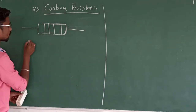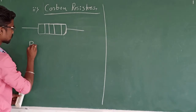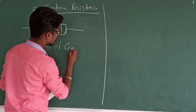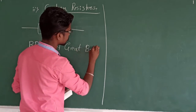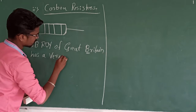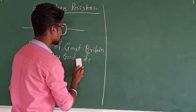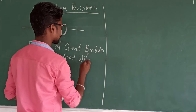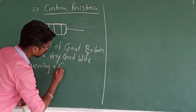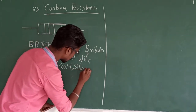Before looking at the standard chart, let me show you how to remember all those colors. I will write one sentence: 'B.B. Roy of Great Britain has a Very Good Wife Wearing Gold and Silver necklace.'